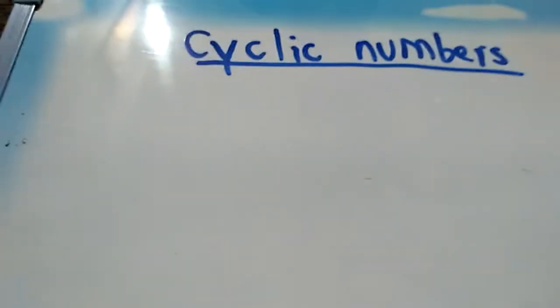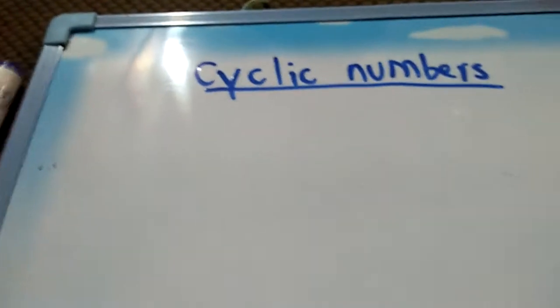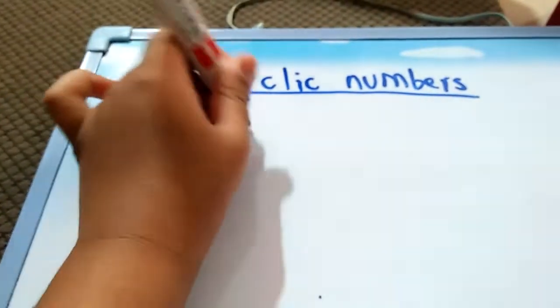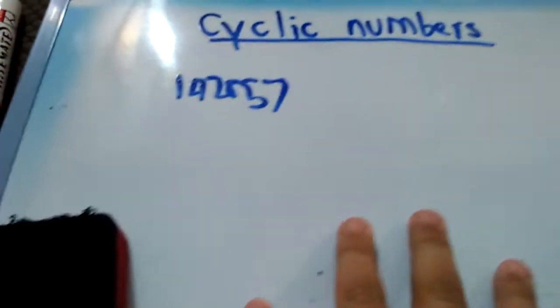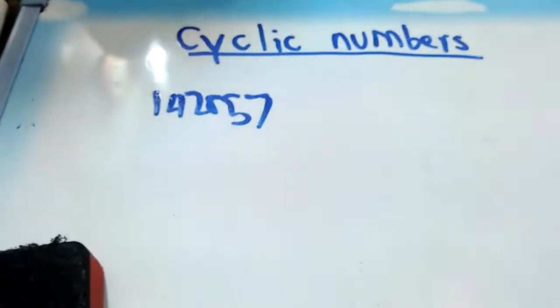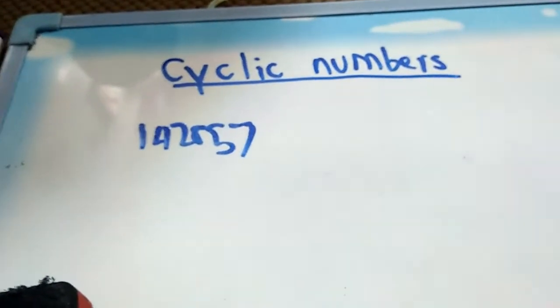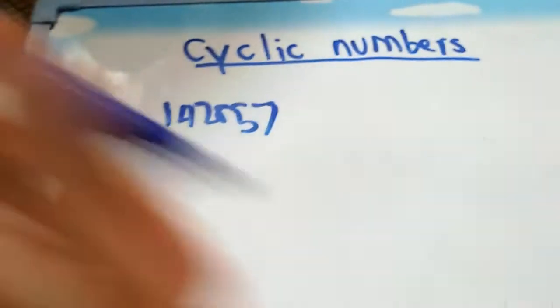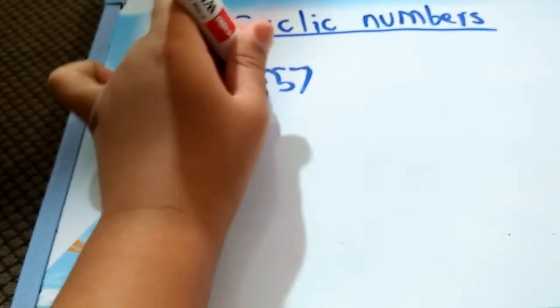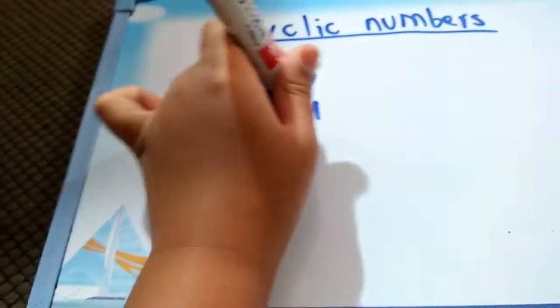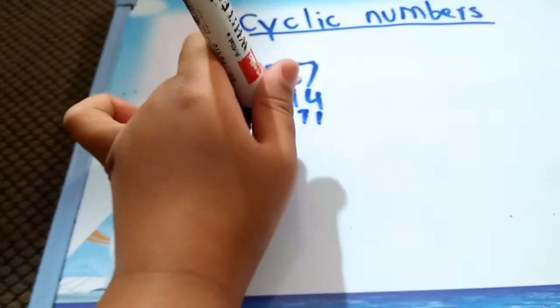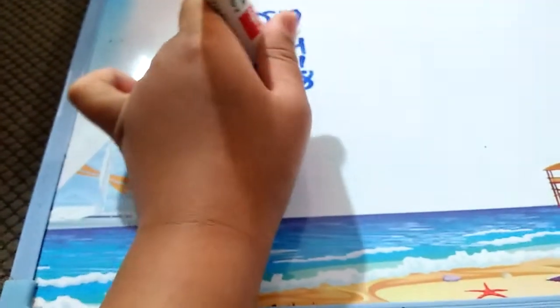Also, 142857 is a digit changer — a cyclic number — because its first six multiples use the same digits. 142857 times two is 285714. Times four is 428571. Times five is 571428. Times seven is 714285.